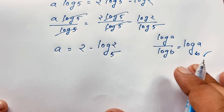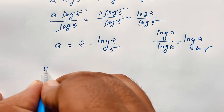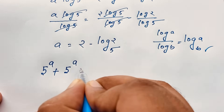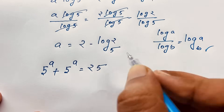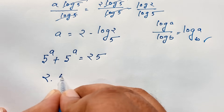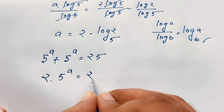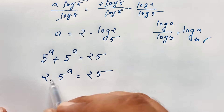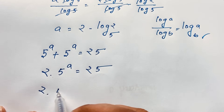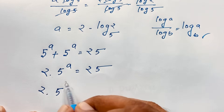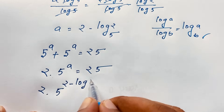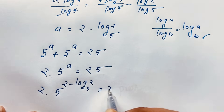Let's verify. Our original question is 5 to the power a plus 5 to the power a equals 25. This simplifies to 2 times 5 to the power a equals 25. Substituting a equals 2 minus log base 5 of 2, we get 2 times 5 to the power (2 minus log base 5 of 2) equals 25.